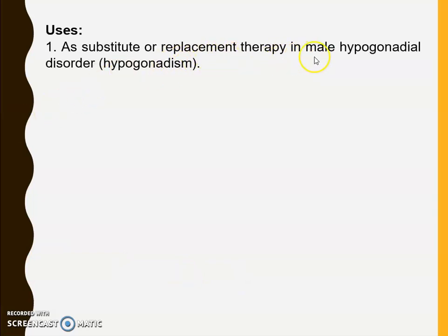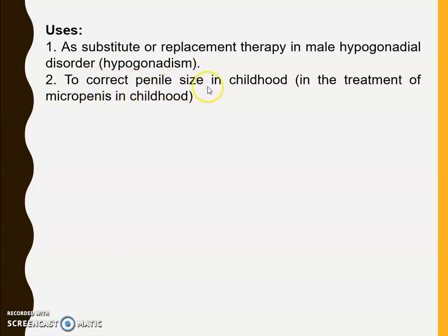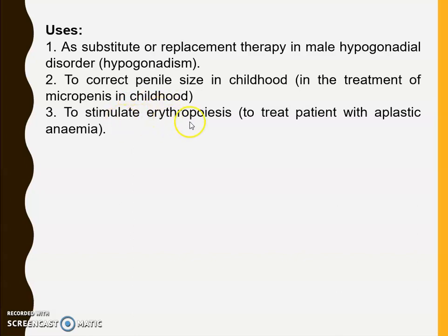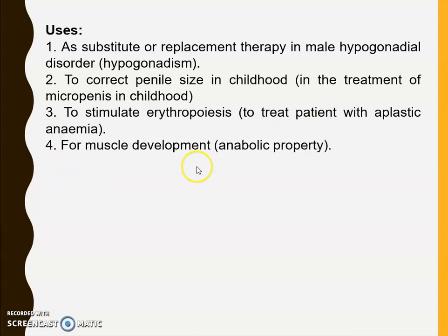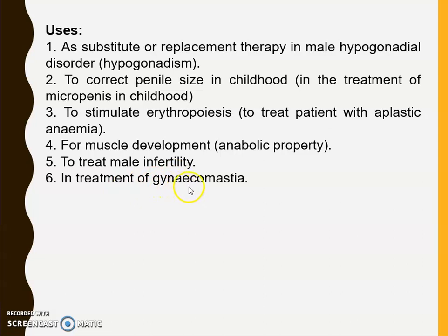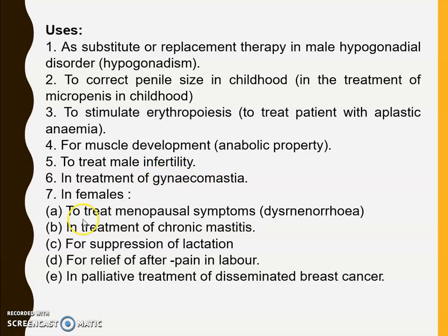Uses of Nandrolone are similar to testosterone: replacement therapy in male hypogonadal disorders, correction of penile size in childhood (treatment of micropenis), stimulation of erythropoiesis to treat aplastic anemia, muscle development due to anabolic properties, treatment of male infertility, treatment of gynecomastia. In females: treatment of menopausal symptoms, chronic mastitis, suppression of lactation, and relief of pain after labor.